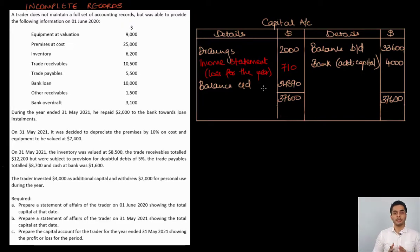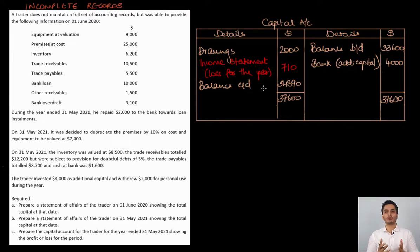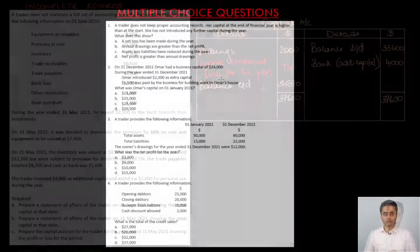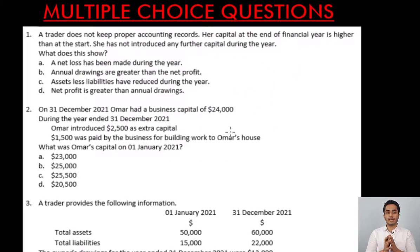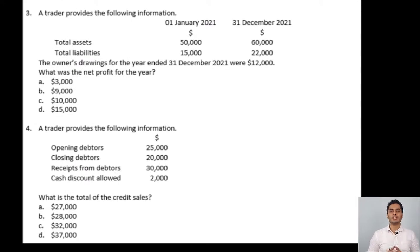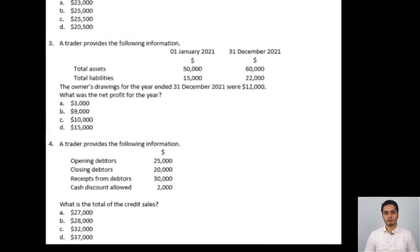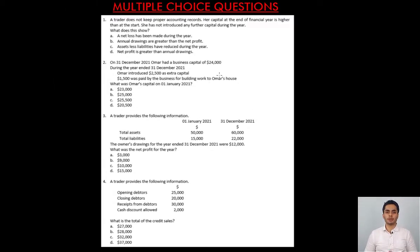This is how you can use the opening and closing statement of affairs to calculate the profit or loss for a trader or business that does not follow double-entry bookkeeping. If you found the video useful, please like and share it with your friends, subscribe to the channel, and press the bell icon so you don't miss future videos. Thank you for watching — see you soon.